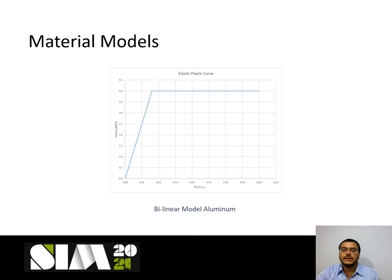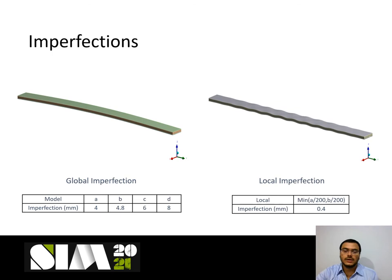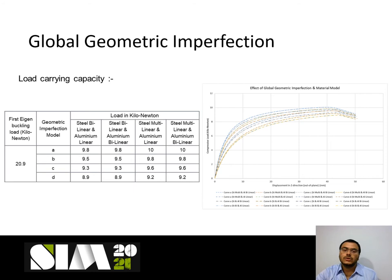The material model considered for aluminium foam is a bilinear material model without strain hardening, due to the fact that for aluminium foam only a few properties are known. Global imperfection in the form of bow imperfection and local imperfection in the form of fresh sprinkling are considered. Non-linear buckling analysis is performed and the results are as follows.